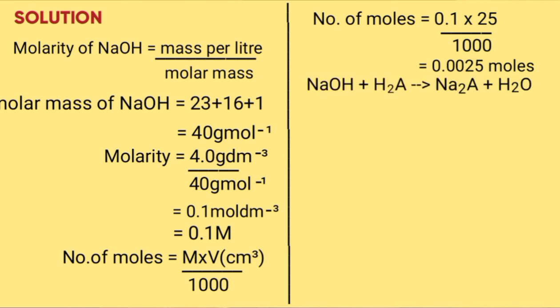The equation for the reaction: sodium hydroxide plus the dibasic acid H₂A gives Na₂A plus water. Since the dibasic acid has two hydrogen atoms, we balance by placing 2 in front of sodium hydroxide and 2 in front of water. The mole ratio becomes 2 to 1.